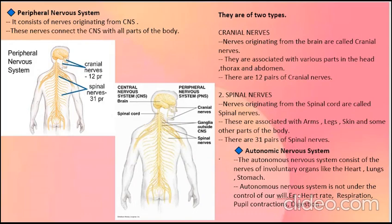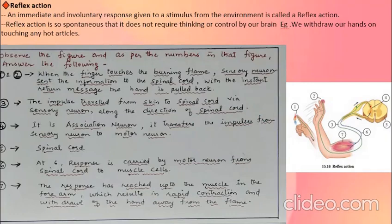The autonomic nervous system consists of the nerves of involuntary organs like the heart, lungs, and stomach. It is not under the control of our will. Examples include the heart rate, respiration, digestion, and pupil control.